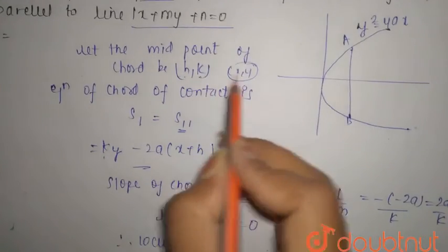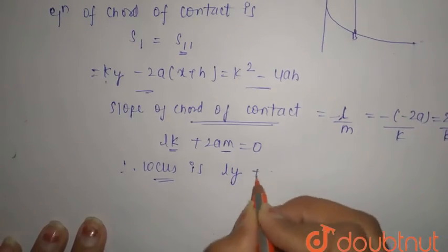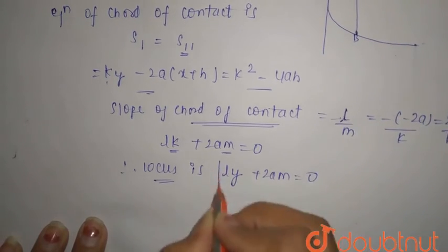So this is ly + 2am = 0, and this is the locus. Thank you.